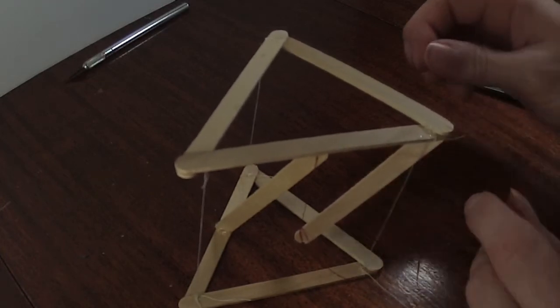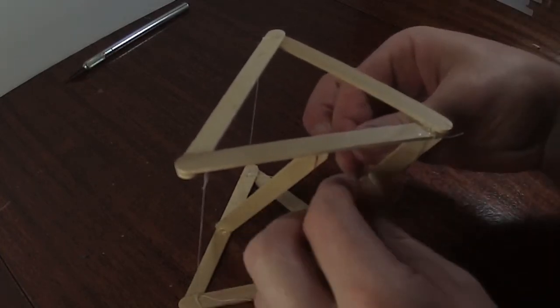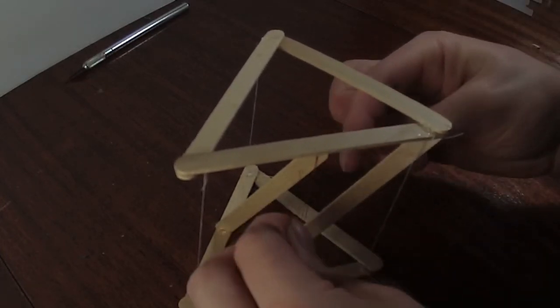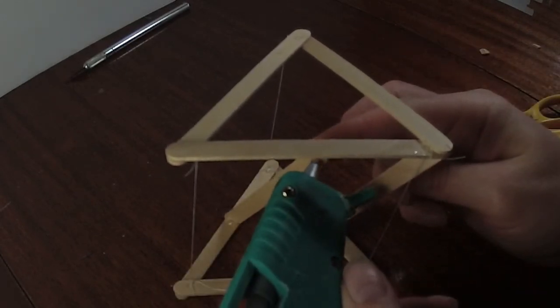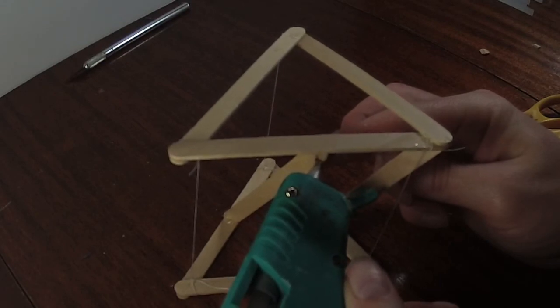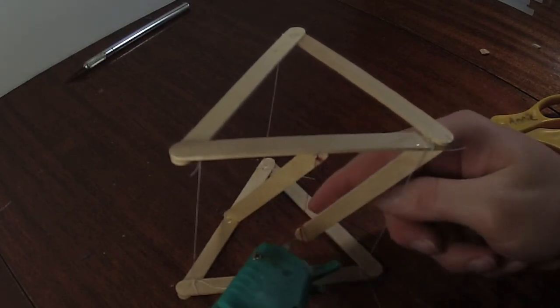Again, when we're using hot glue, it's great for putting things in place, but we really want to use knots and maybe some super glue to make sure. Now all I need to do is tack that in place, just so it doesn't slide around, and trim up any loose ends that I have.